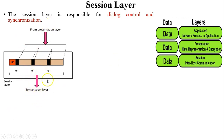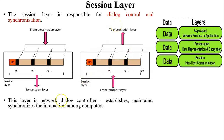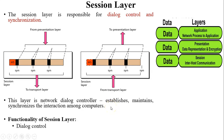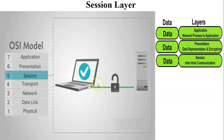In the session layer, at the sender side, data comes from the presentation layer and passes to the transport layer. A header is included containing dialogue control details, and checkpoints are added for synchronization. At the receiver end, when data comes from the transport layer, the header is removed and data is passed to the presentation layer. In the animation, you can see one session is established and then an authentication process is done for a secure connection.